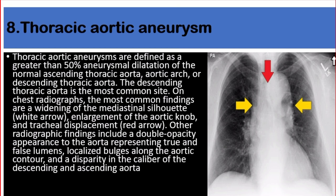Number eight: thoracic aortic aneurysm. Thoracic aortic aneurysms are defined as greater than 50% dilatation of the normal ascending thoracic aorta, aortic arch, or descending thoracic aorta — the descending thoracic aorta being the most common site. On chest radiographs, the most common findings are widening of the mediastinal silhouette, enlargement of the aortic knob, and tracheal displacement. Other radiologic findings include a double opacity appearance to the aorta representing true and false lumens, localized bulges along the aortic contour, and a disparity in caliber between the descending and ascending aorta.